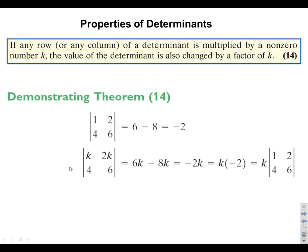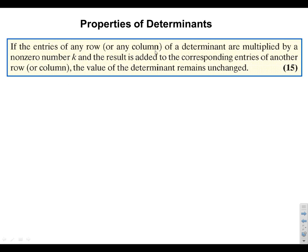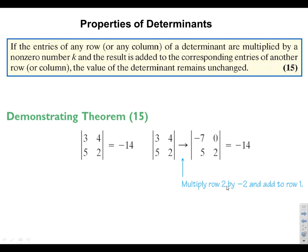One more property: if the entries of any row are multiplied by a non-zero number k and the result is added to the corresponding entries of another row, the value of the determinant remains unchanged. For example, multiply row 2 by negative 2 to get negative 10 and negative 4, add that to the top row: negative 10 plus 3 is negative 7, negative 4 plus 4 is 0 — your determinant remains unchanged. Have all those properties in your notes.